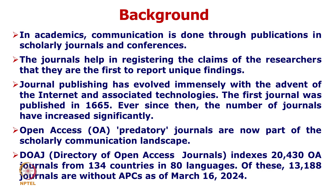As far as the background of predatory publishing is concerned, in academics communication is done through publications in scholarly journals and conferences. The journals help in attesting the claims of the researcher that they are the first to report unique findings. Journal publishing has evolved immensely with the advent of the internet. The first journal was published in 1665, and since then the number of journals has increased significantly. The Directory of Open Access Journals indexes 20,430 open access journals from 134 countries in 80 languages, of which 13,188 journals are without APCs as of March 16, 2024.